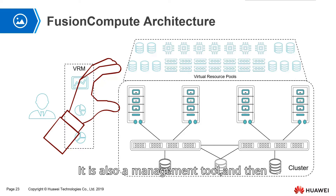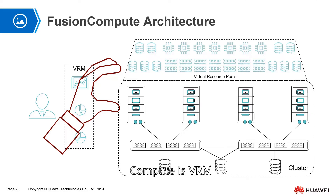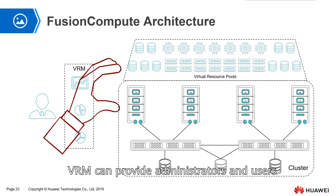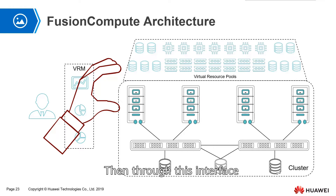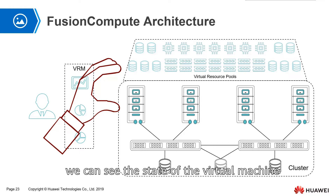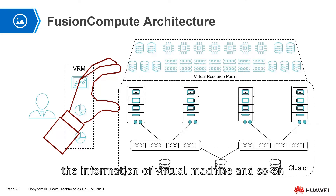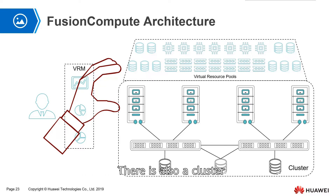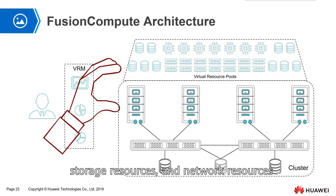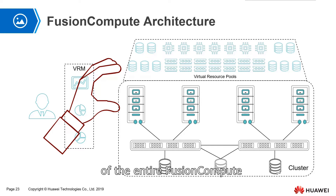VRM can provide administrators and users with a graphical web interface. Through this interface, we can see the state of virtual machines, the state of the virtual resource pool, the information of the physical hardware, and the information of virtual machines. There is also a cluster. The cluster provides computing resources, storage resources, and network resources. All of the above are the architectures of the entire Fusion Compute.